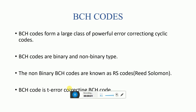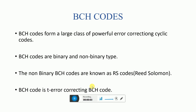Hello students. In the previous lecture we studied what is primitive polynomial, what is Galois field, what is minimal polynomial, and how to calculate the minimal polynomials from various Galois field elements. In this lecture we are going to study what is BCH code and the encoding process of BCH code.